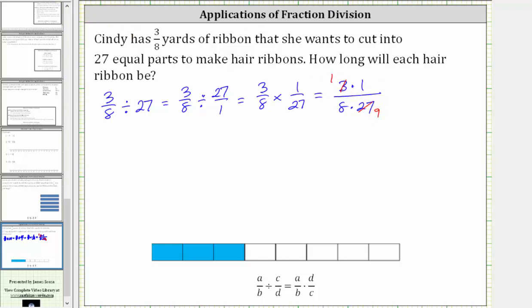If this is hard to follow, we can write 27 as 3 times 9, which would give us 3 times 1, all over 8 times 3 times 9. Writing it this way, we can actually see the common factor of 3 between the numerator and the denominator.